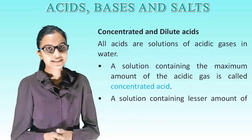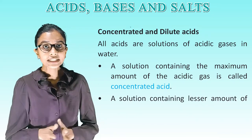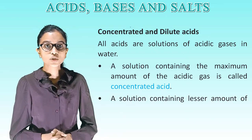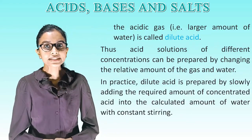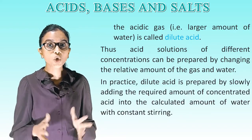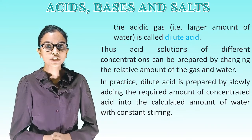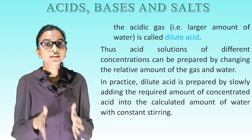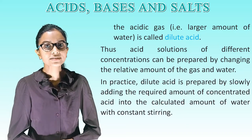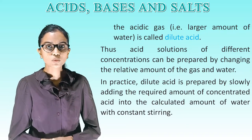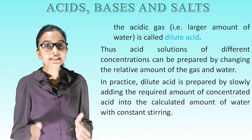Concentrated and dilute acids. All acids are solutions of acidic gases in water. A solution containing the maximum amount of the acidic gas is called concentrated acid. A solution containing a lesser amount of the acidic gas — that is, a larger amount of water — is called dilute acid. Thus acid solutions of different concentrations can be prepared by changing the relative amount of gas and water. In practice, dilute acid is prepared by slowly adding the required amount of concentrated acid into the calculated amount of water with constant stirring.